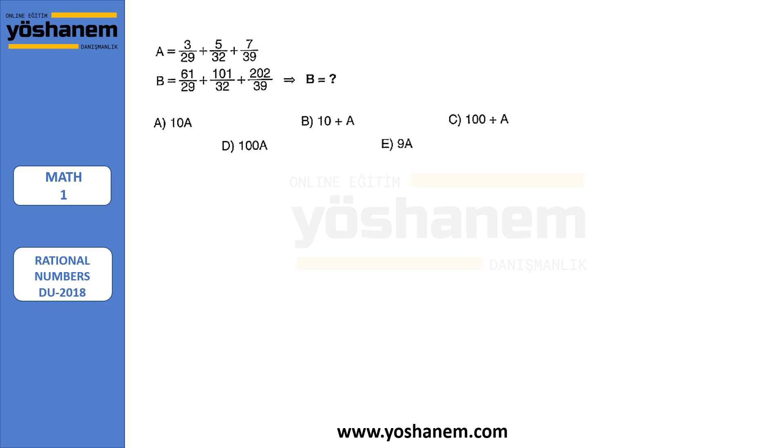This is from 2018. And it asks us B. Look at A and B. So B looks bigger, right? That's why I can subtract A from B. Let's try this. B minus A. So 61 over 29 plus 101 over 32 plus 202 over 39 minus 3 over 29 plus 5 over 32 plus 7 over 39.